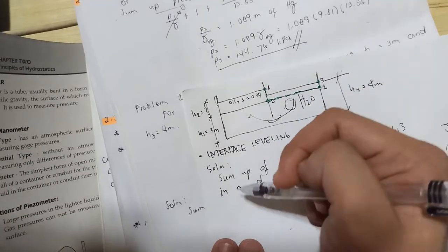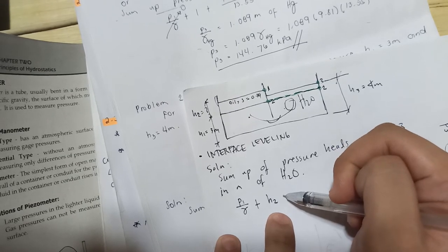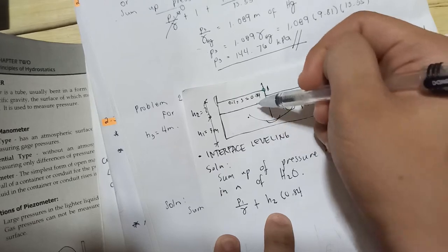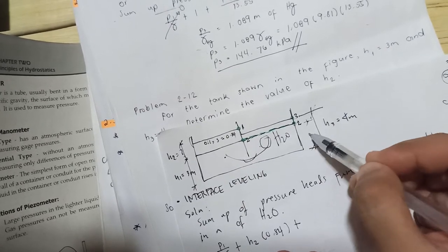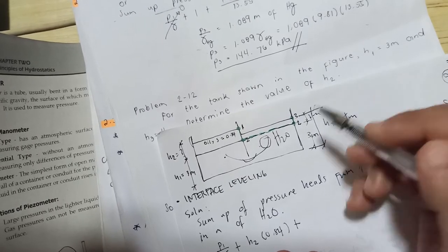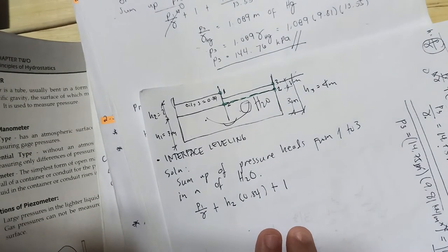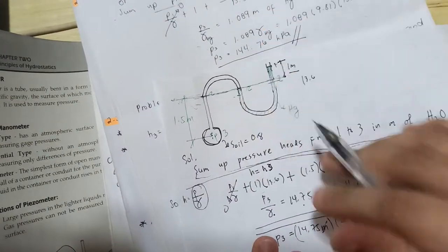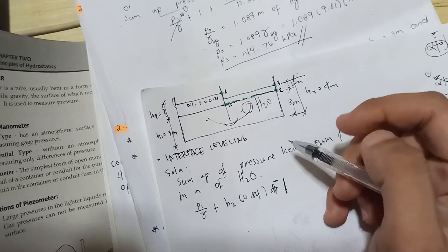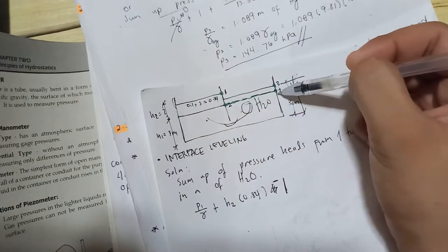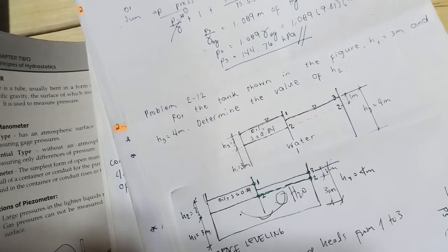Sum of pressure heads from 1 to 3 in meters of H2O: P1 over unit weight plus h2 times specific gravity of oil 0.84 plus 1 for water minus 1 equals P3 over unit weight. Since both sides are open to air, both pressures equal zero.